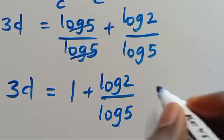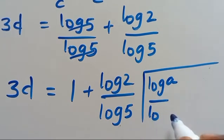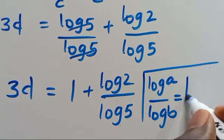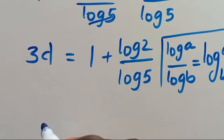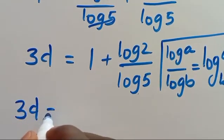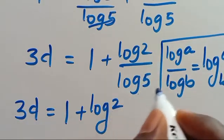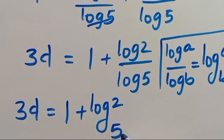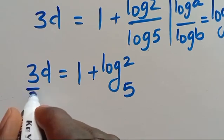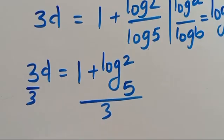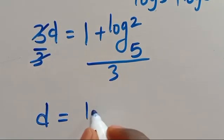So we have 3D: log 5 divided by log 5 will be 1, plus log 2 divided by log 5. Then recall that log A divided by log B equals log A in base B. So from here we have 3D equals 1 plus log 2 in base 5.